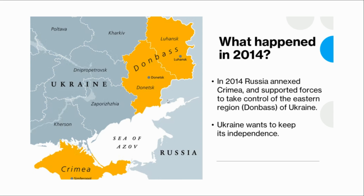Since 2014, the war has continued in the Donbass region. When Russia invaded Crimea and Donbass, European countries did not say much — they either didn't want to stop Russia or didn't have the power to do so.